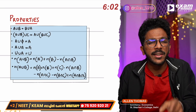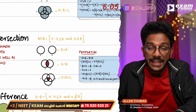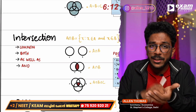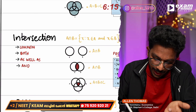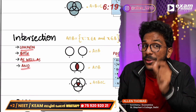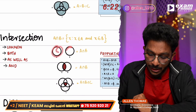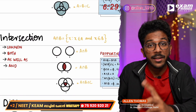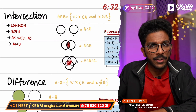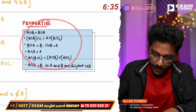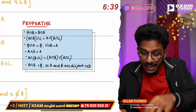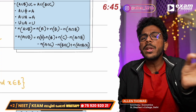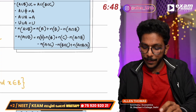You should learn the word problems on this topic. Intersection means common elements. A union B includes all elements in A or B. The formula for union is very important — you must memorize it for solving word problems.